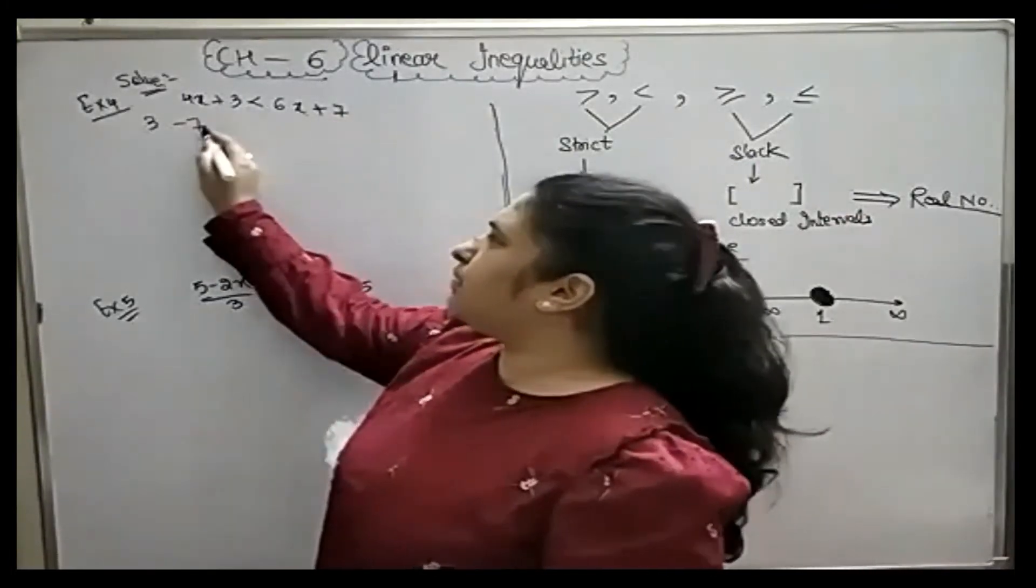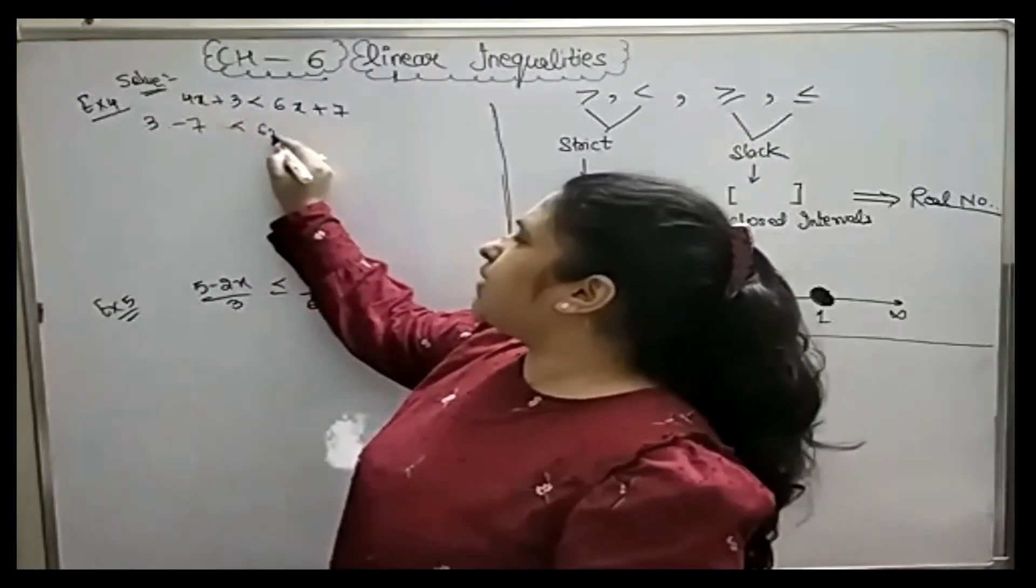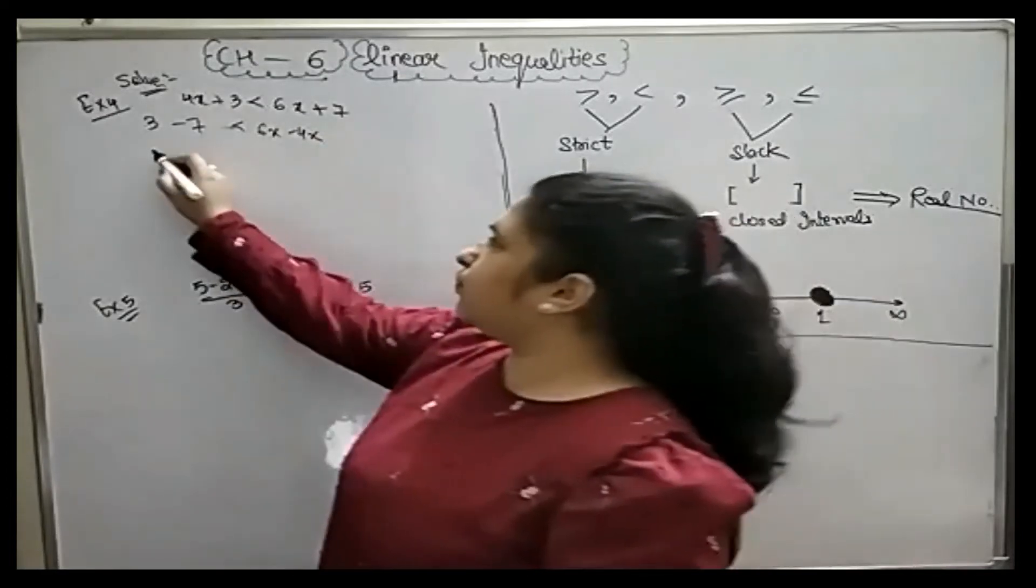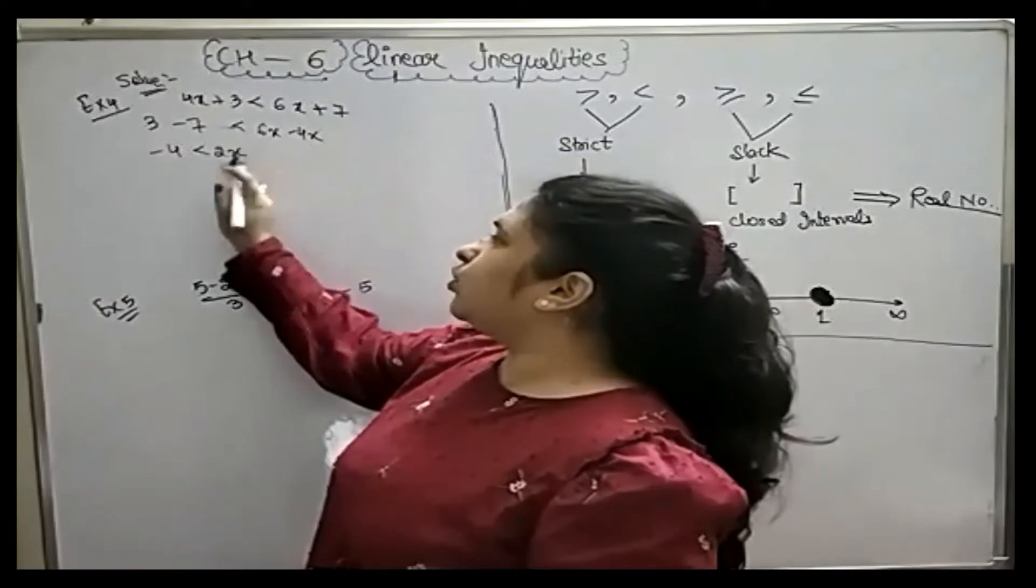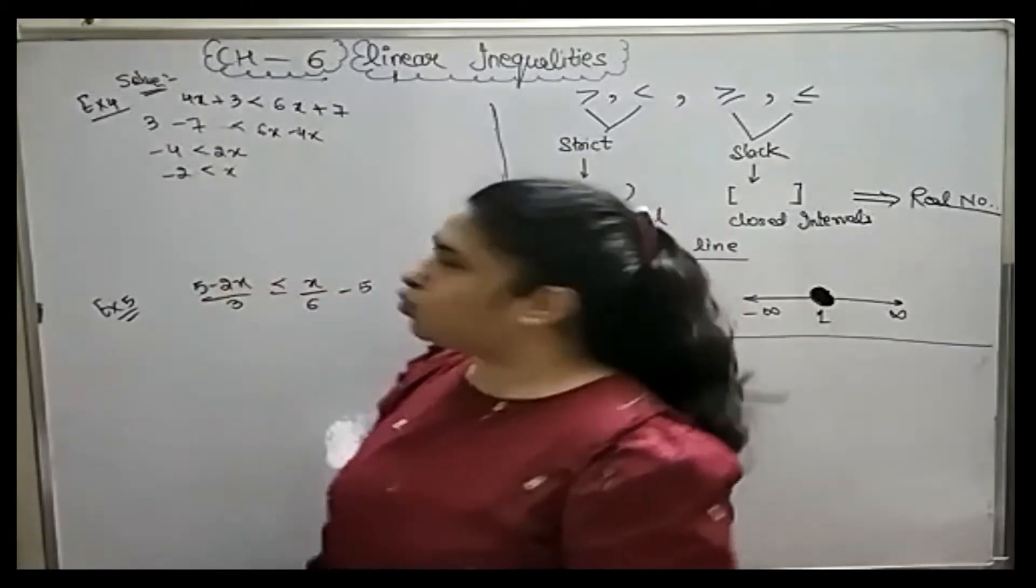This is plus 7 and minus here. This is plus 4x and minus here. This is 1x, 1x, 1x and 1x. That is minus 4 less than 2x. So if you divide it, what will be minus 2? Correct.